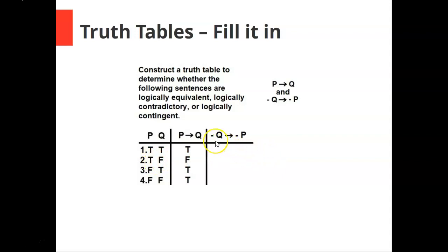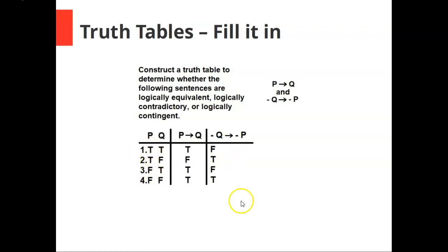For our second sentence, if not q then not p, we have to fill in not q and not p before we can fill in the conditional. For not q, you just take the q column and flip it: false, true, false, true. Similarly for not p, take the p column and flip it: false, false, true, true.